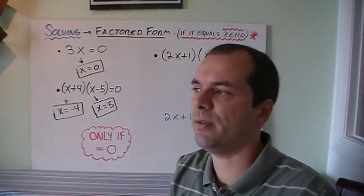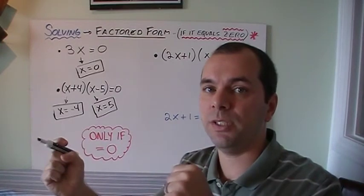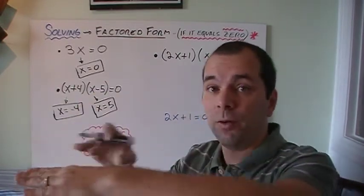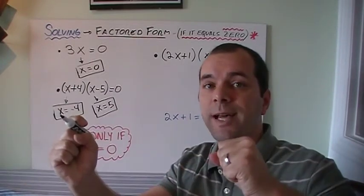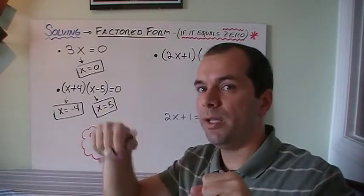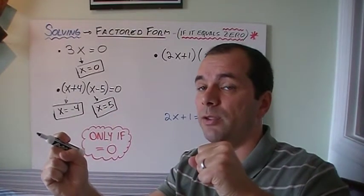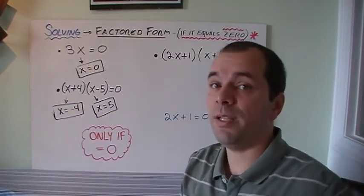Now x can't be minus 4 and 5 at the same time, so it looks like we're going to have two separate solutions. If it equals 0, it means I'm looking for the actual x-intercept, which means it's going to cut the x-axis in two spots. That makes sense because the parabola either opens up or down but could cut the x-axis in two places. So I can have two different answers and that's all right.